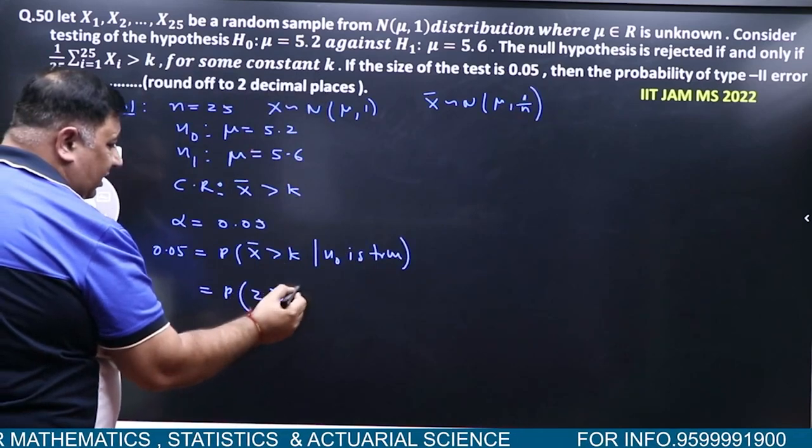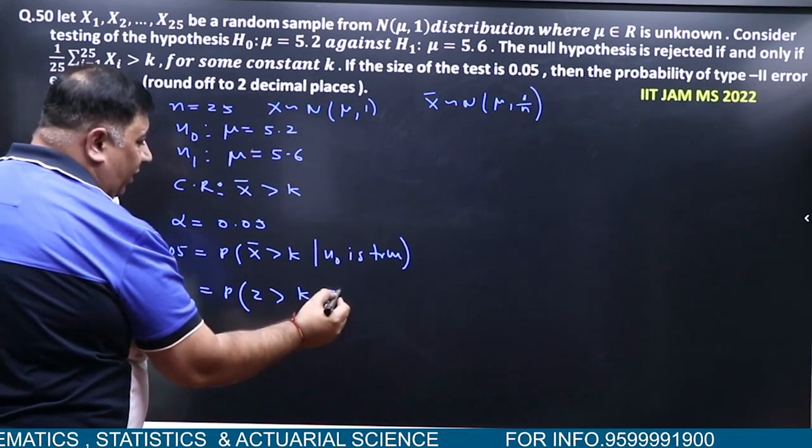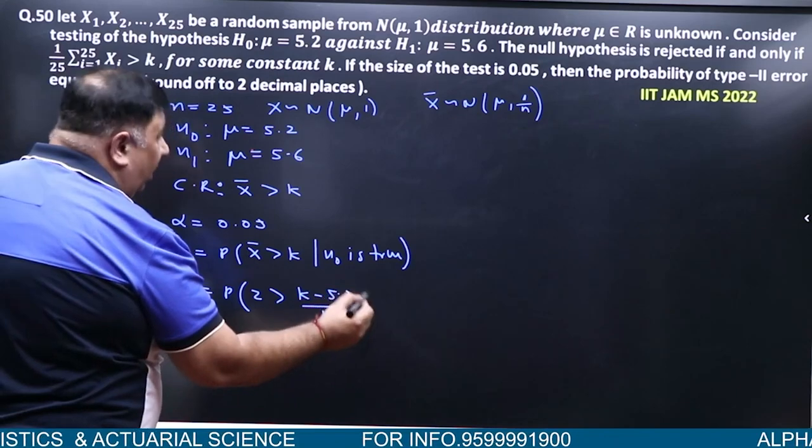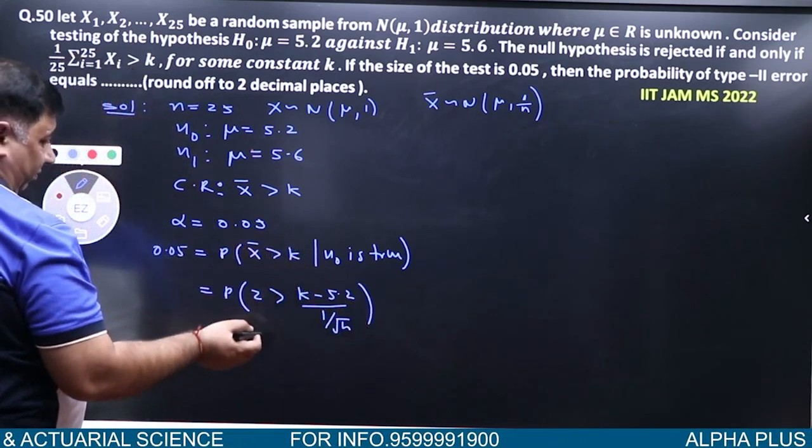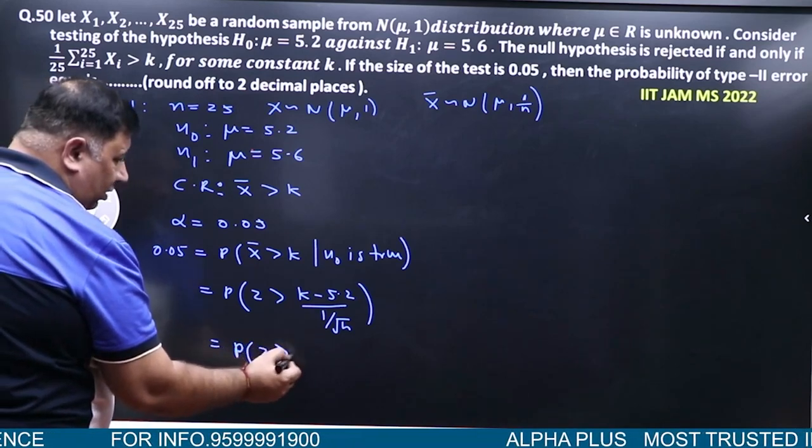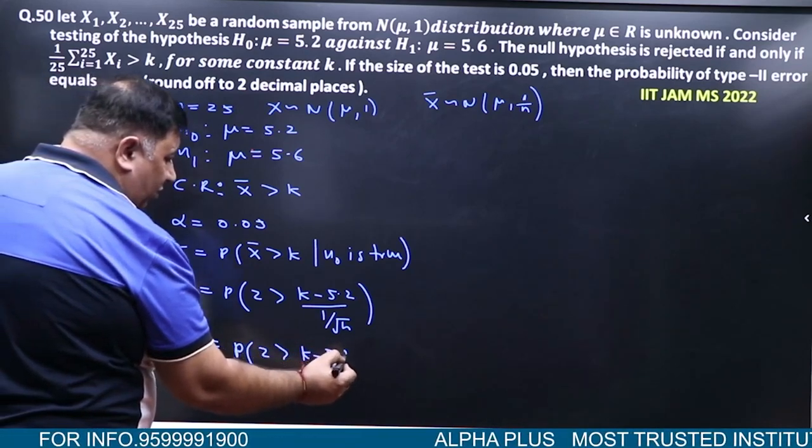Probability Z is greater than (K minus μ, μ is 5.2) upon 1 by root N. So K minus 5.2 times root N...